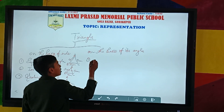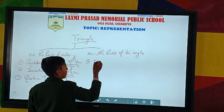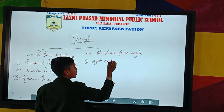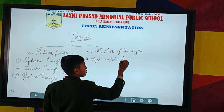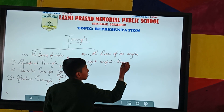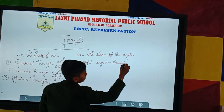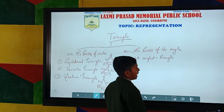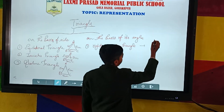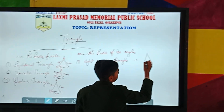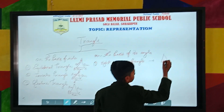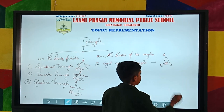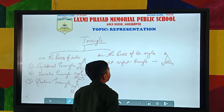On the basis of its angle, first one is right angle triangle. A triangle in which one angle is 90 degrees is known as right angle triangle. For example, this is the example of right angle triangle.